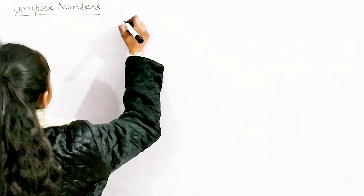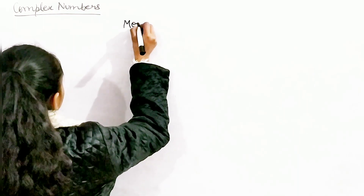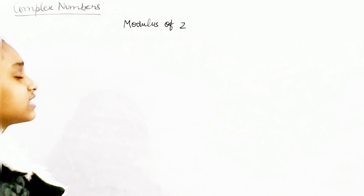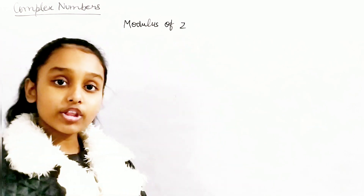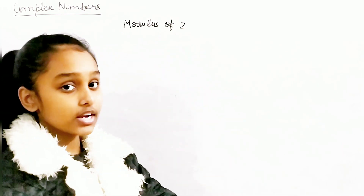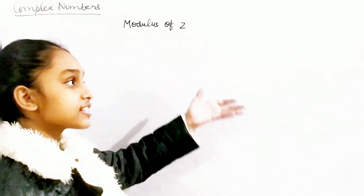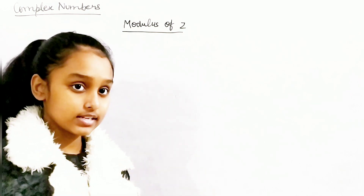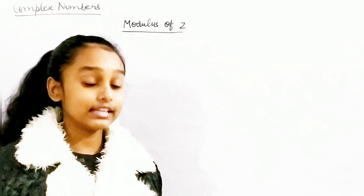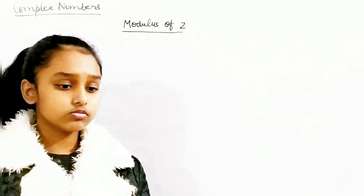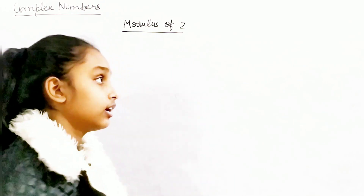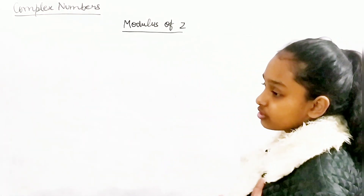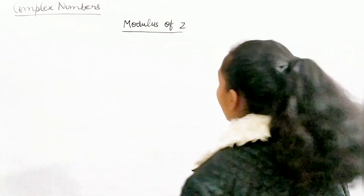So we're writing the modulus of z. The letter z is used to denote the complex number. The modulus of z means the modulus of a complex number z. Just to clarify — a complex number can be represented by any letter, like a, c, j, k, l, or anything else, but it's usually represented by z, which is why I'm using z here.